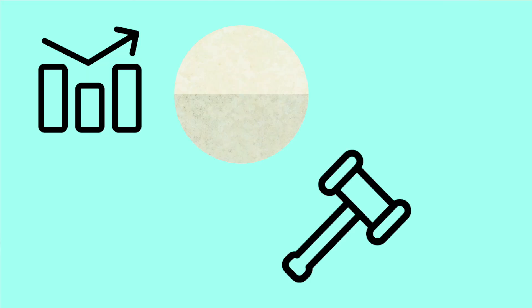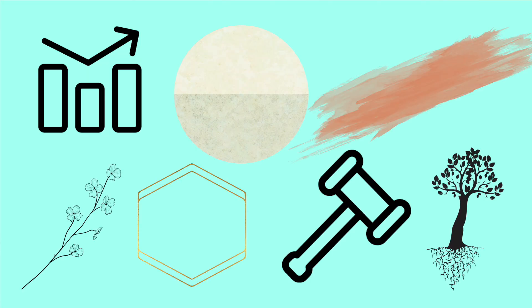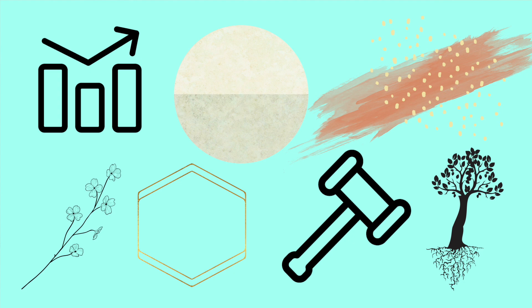Now let's talk about vector files. Vector files work on a mathematical point-based system, which means they can be scaled to any size without losing quality. They're not as good as raster files for photographs, but they're actually better for non-photographic images like icons, graphic elements, or anything that would need to be scaled even to a really large size like a billboard.